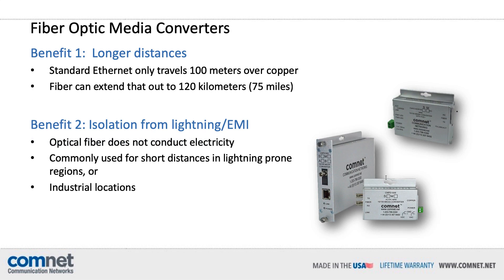The number one benefit with fiber optic media converters is the long distances they can carry an Ethernet signal. Standard copper CAT-6 cables only carry the signal 100 meters, but a fiber optic media converter can extend that out over 100 kilometers or more. The second most common reason for using a fiber optic media converter is to isolate devices in an outside location from lightning or other electromagnetic interference. Optical fiber does not conduct electricity, so any lightning strike or EMI will be isolated to that location and not carry back to the head end.